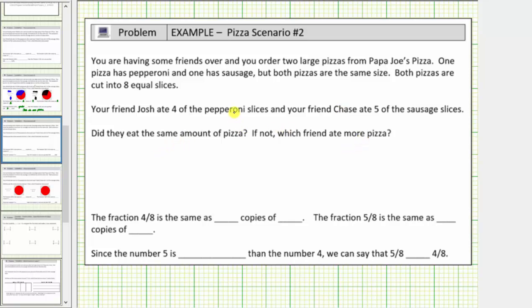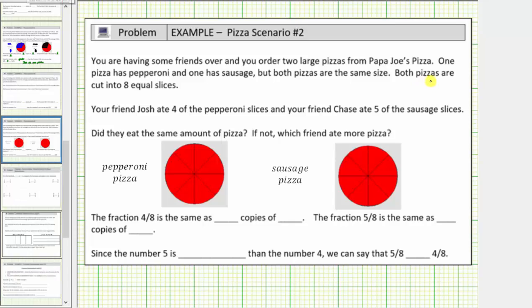Let's begin by modeling the two pizzas. Both pizzas are cut into eight equal slices, so let's call this pizza the pepperoni pizza and this pizza the sausage pizza.